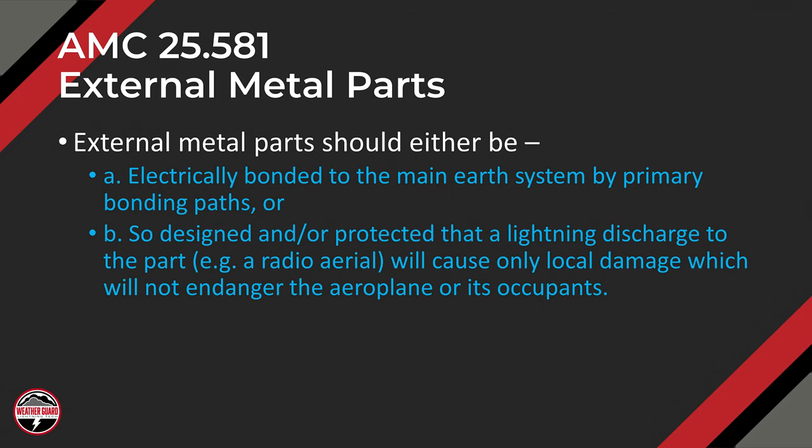EASA provides additional information, which is fantastic for someone designing a component for the first time. The acceptable means of compliance that EASA puts out provides that guidance. The AMC 25.581 discusses external metal parts. External metal parts should be either A, electrically bonded to the main earth system by primary bonding paths, or B, so designed and protected that a lightning discharge to the part — such as a radio aerial — will cause only local damage which will not endanger the airplane or its occupants.